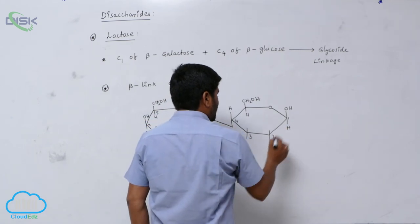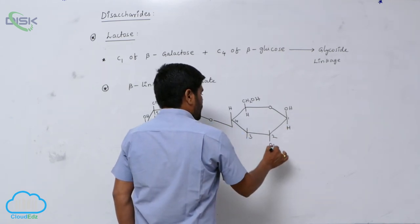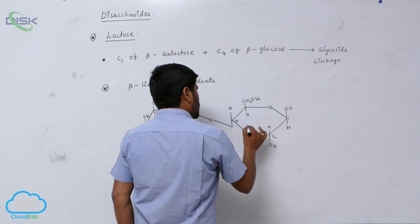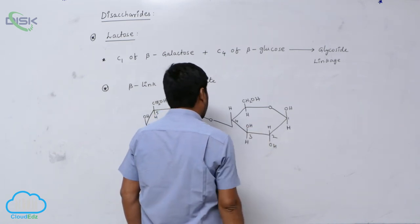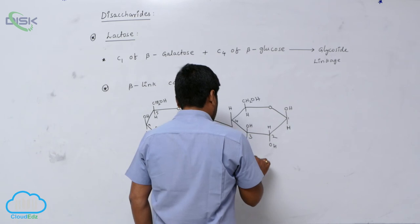There is hydrogen below. This is above, like this. This is known as beta.